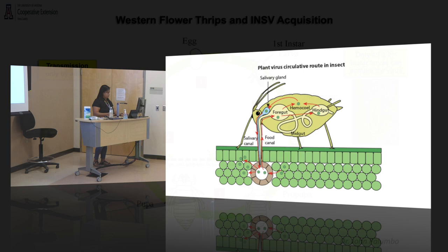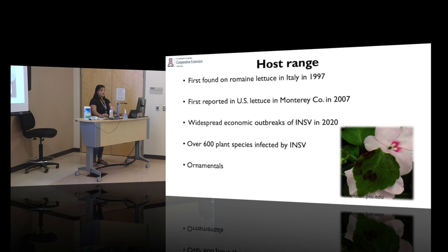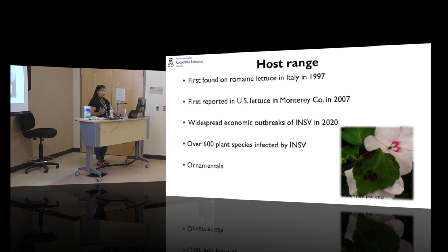When the first and second-instar larvae feed on an infected plant, the virus enters and during pupation the virus particles transmit into the hemocoel. When the insect emerges as an adult, it has the capability to transmit the virus via the salivary gland. Moving on to host range: as if the thrips' wide host range were not enough, INSV also has a very wide host range.